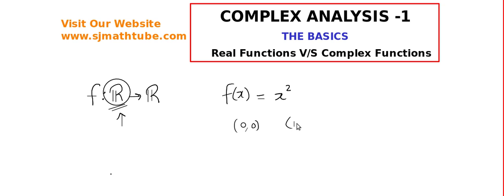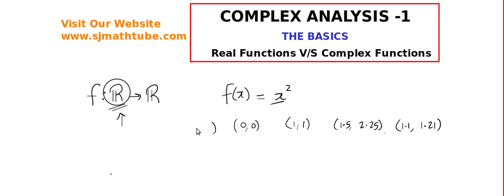I will input 1, I will get the output 1 squared, that is 1. I input 1.5, I get 1.5 squared, that is 2.25. I input 1.1, I get 1.21. Whatever I input will get squared. Of course, there are negative numbers. If I input minus 1, I will get 1. If I input minus 10, I will get 100.